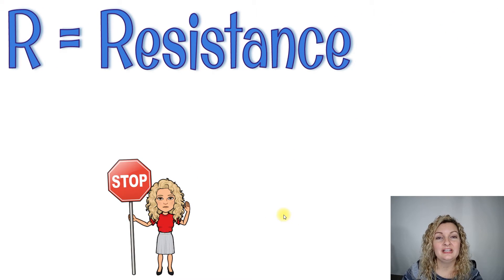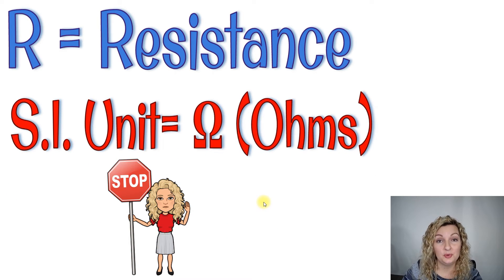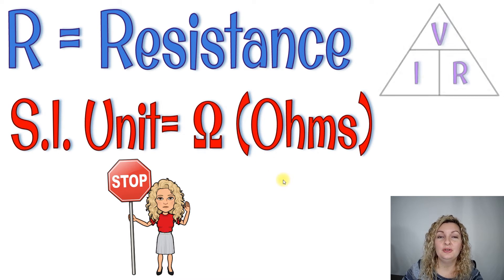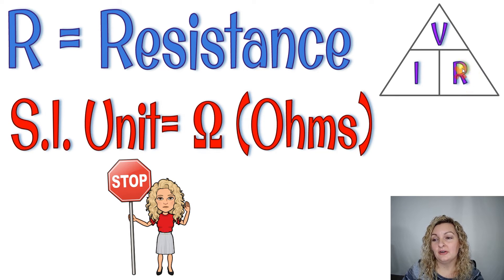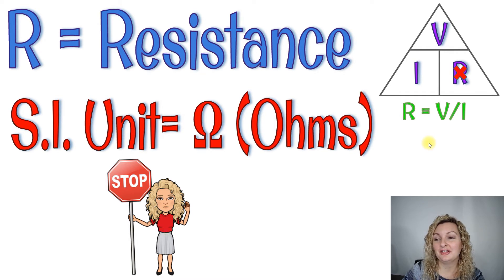Our last variable is R, which equals resistance, and resistance is going to be measured in ohms — that really weird looking upside-down horseshoe symbol. Now if we look at our triangle for resistance, you're going to see that if we cross out our R, what is left is a V over top of an I. When it's over top of one another, it's like a fraction, so we're really just dividing in our calculator. So R equals V divided by I, and that's going to get us our answer for resistance.